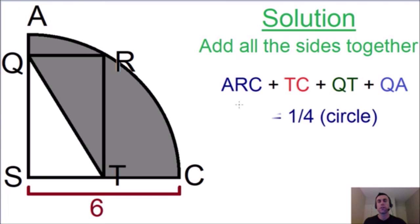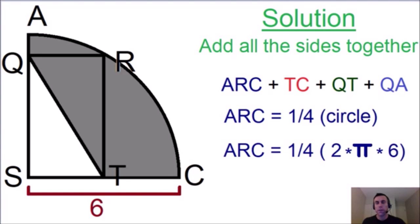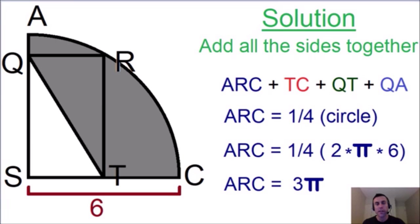Let's start with arc ARC. The length of arc ARC is equal to one quarter of the circle, as given at the beginning. The perimeter of a quarter circle is one quarter of the full circumference: (1/4)(2πR). The radius is six, so we substitute: (1/4)(2π × 6), which simplifies to 3π. So the length of arc ARC equals 3π.